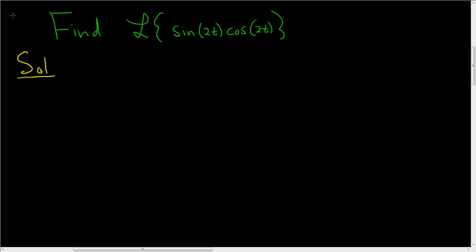We have to find the Laplace transform of sine of 2t times cosine of 2t. This looks tough, but we'll use an identity to make things easier.